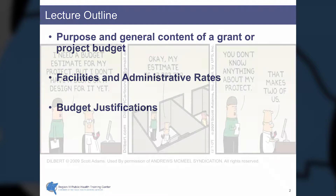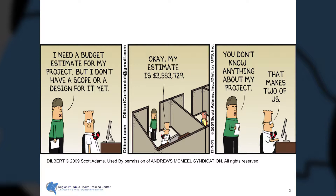The Dilbert comic strip by Scott Adams is well known for portraying the frustrations frequently encountered in administrative functions. In this cartoon, someone comes to Dilbert and asks for help with a project but doesn't know the scope of it yet, so Dilbert gives an off-the-cuff, blue-sky estimate. The person says, 'You don't know anything about my project,' and Dilbert says, 'That makes two of us.' This identifies one of the keys to budgeting: knowing what is to be done, who is going to do it, and how long it's going to take. That's the key to budgeting.